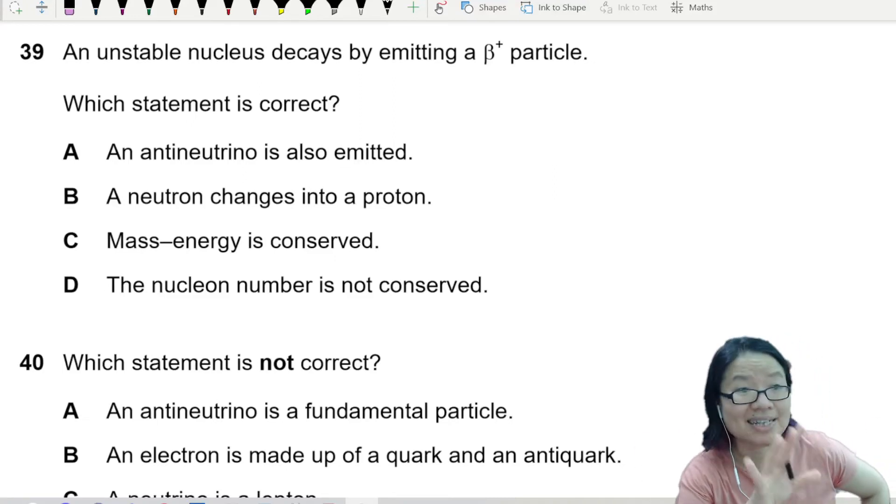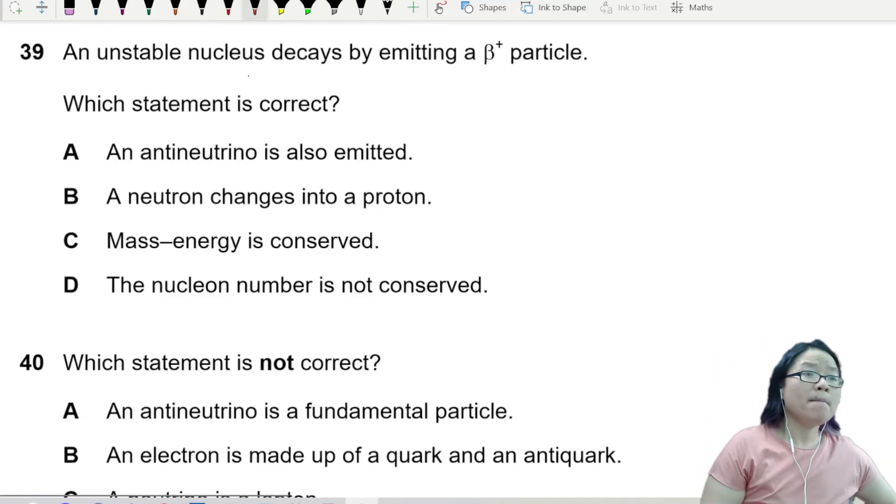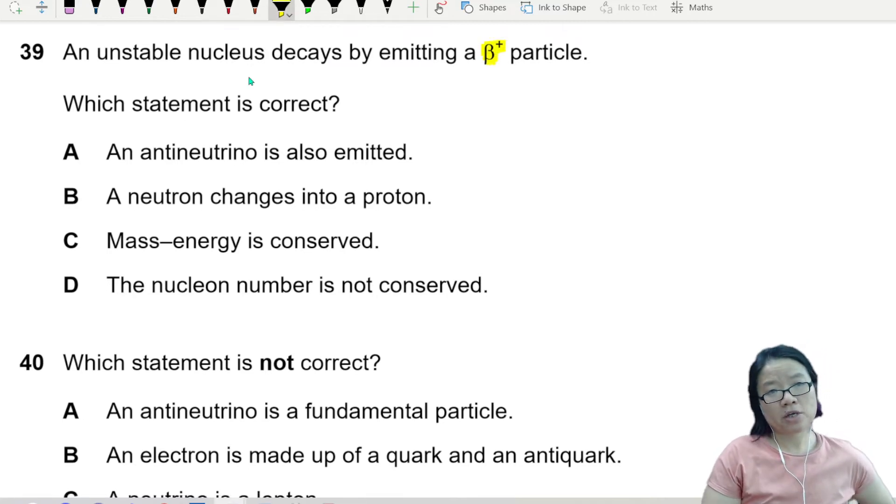An unstable nucleus decays by emitting beta plus particles. For the last two MCQ questions, it's always particle physics, and I have to call this a bonus question, but it's also a factual question. If you know, you know. If you don't know, you can't really answer. This is the kind of chapter you may want to study the eve before the exam so that the facts are fresh in your brain.